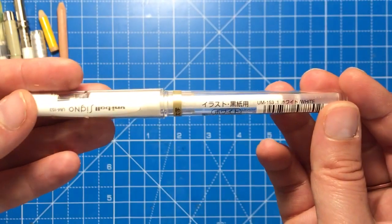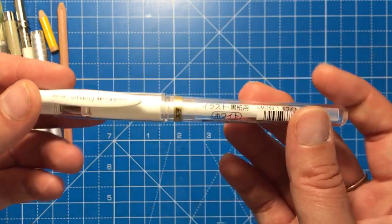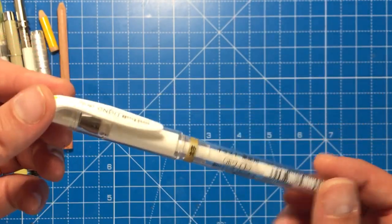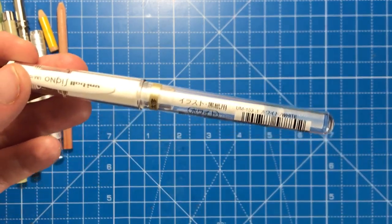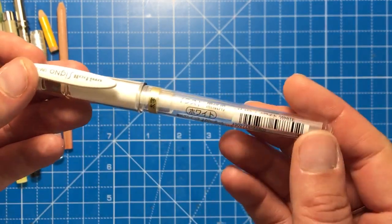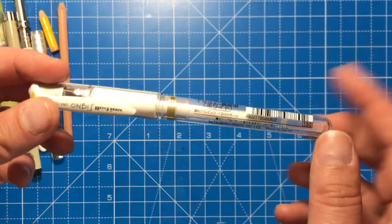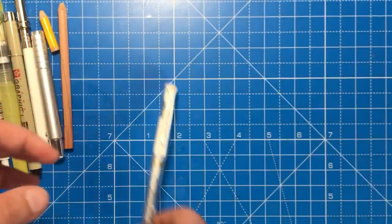It can go over anything that you've coloured and it will still be really white and show up really well. This is perfect for highlights like glints in the eyes or maybe if you're doing gems and crystals and you want those highlights on the edge, this is perfect for that.